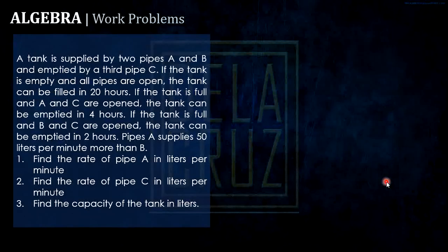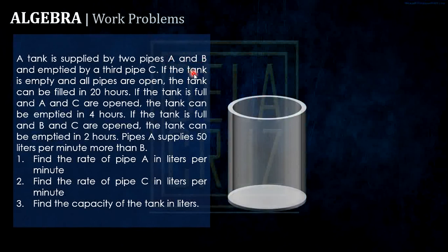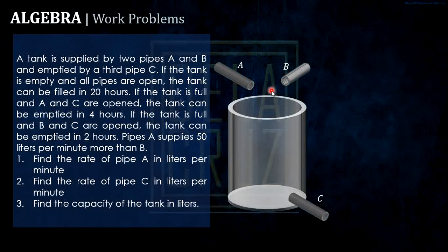Last problem — this is quite challenging. A tank is supplied by two pipes: A and B fill the tank, while C is the outflow pipe. If the tank is empty and all pipes are open, the tank can be filled in twenty hours. Since work here is volume, we have volume equals flow rate times time.